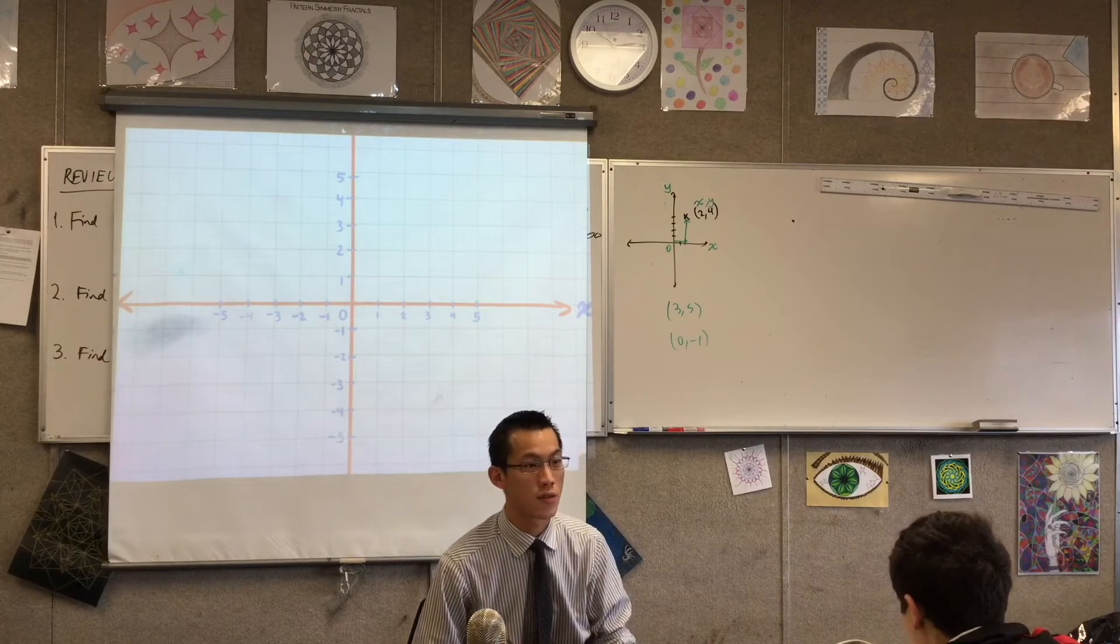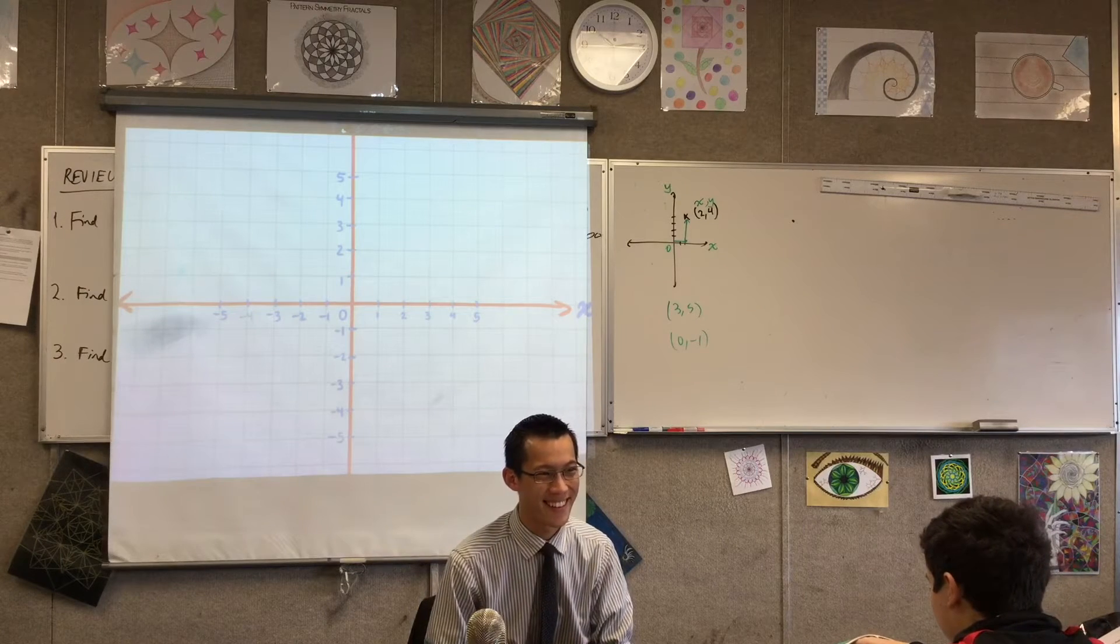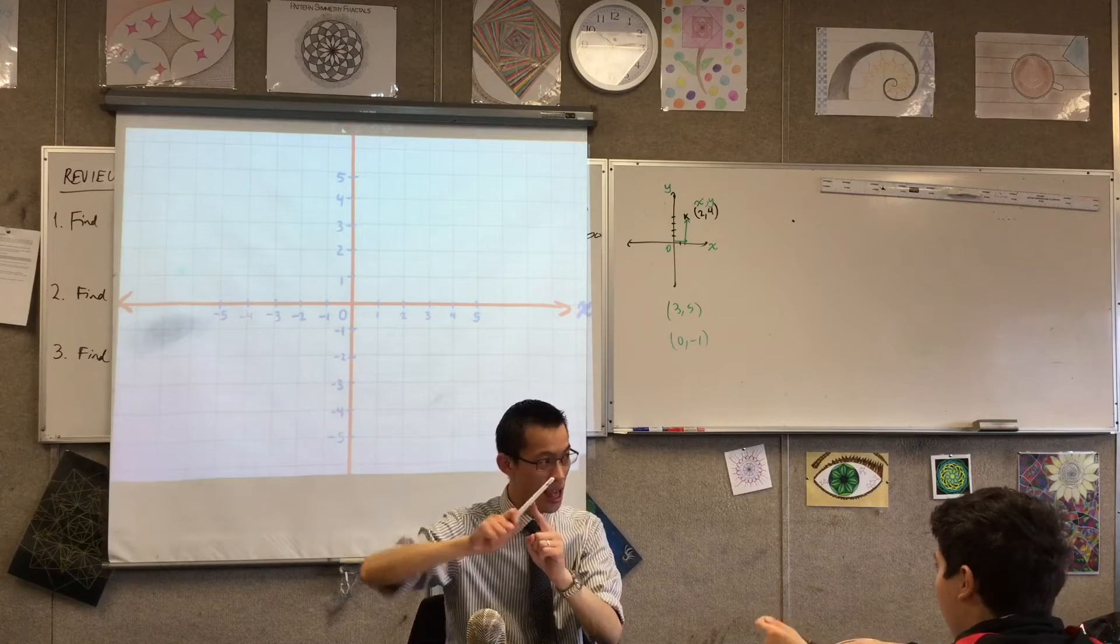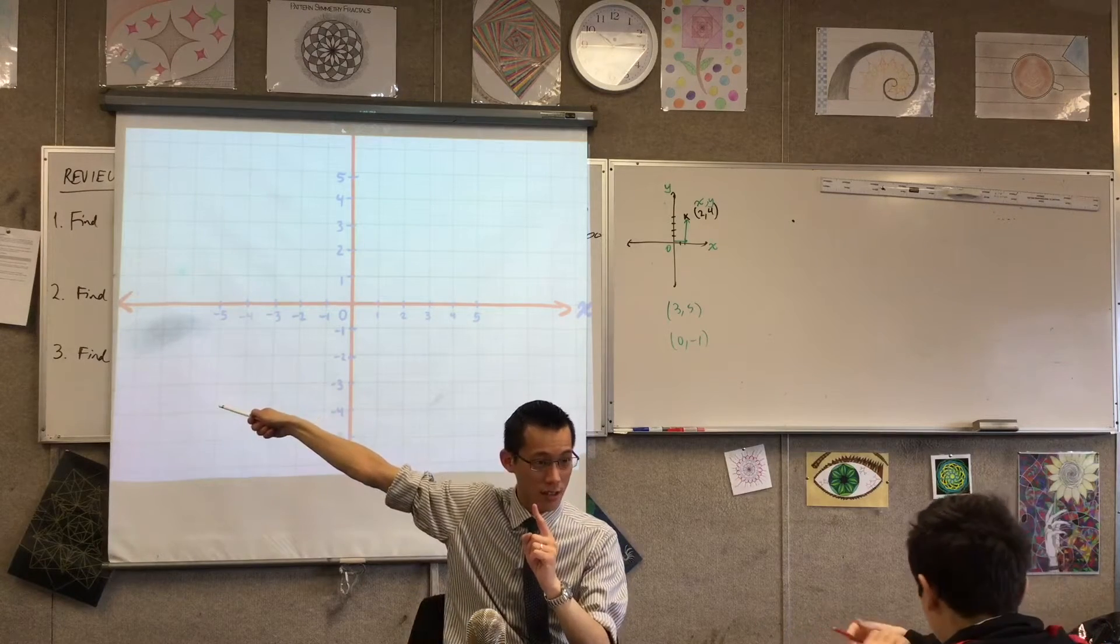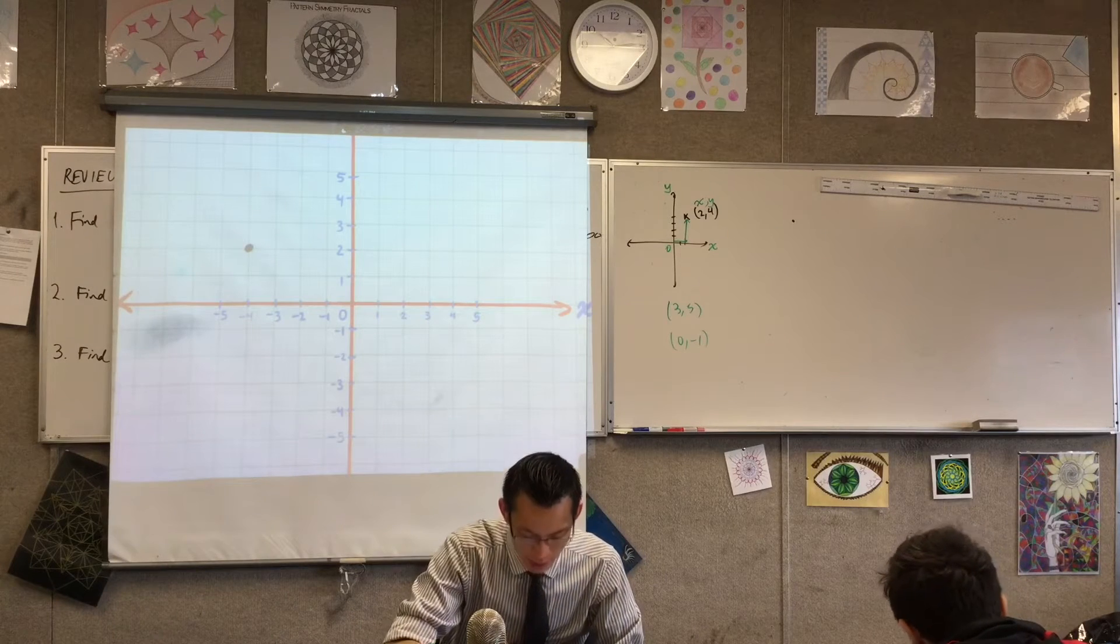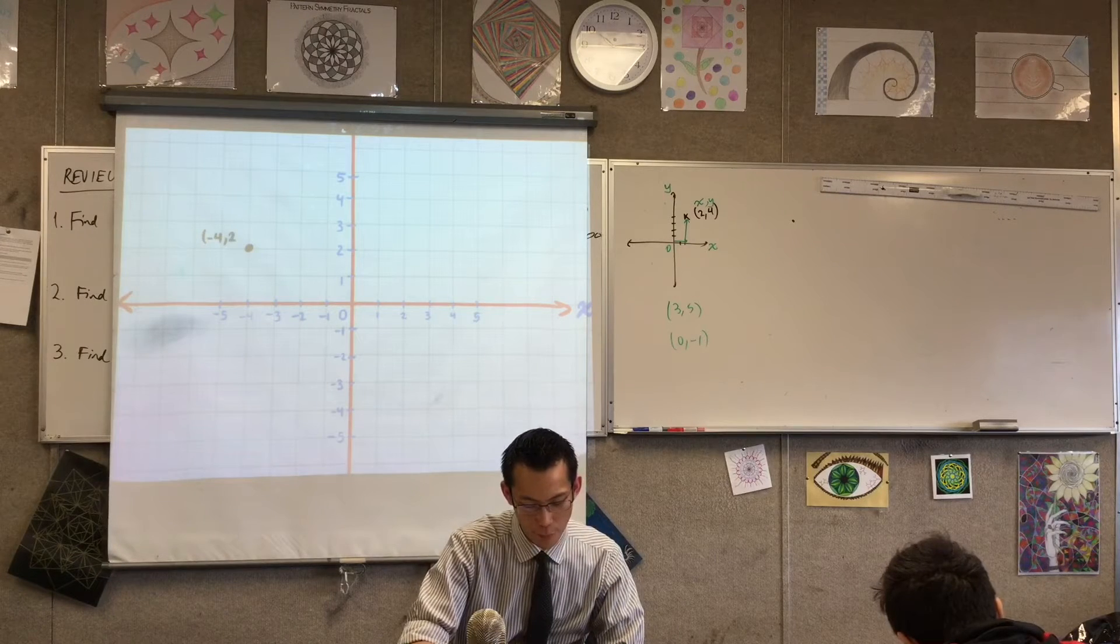The first one? Hannah: negative 4, 2. Very good. So negative 4 tells me to go four units to the left and two units up. Very good. So I count across to here, I've drawn a big fat dot, and I'm gonna label what it is as well: negative 4 comma 2.